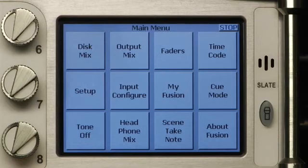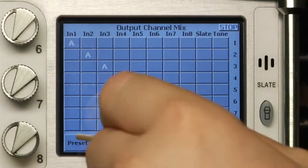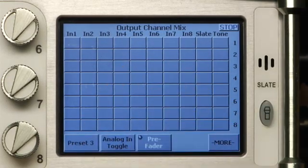It's important to understand that this menu routes inputs to outputs, not disk tracks to outputs. If you wish to route your mix as it appears on track 1 on the home screen, simply duplicate the settings for that track in the output mix. Let's route a split stereo mix to the camera output. First, choose Analog and Post Fader.